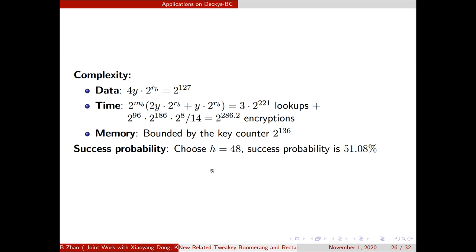And here we can obtain about 2^{170} quartets. Similar to the last step, we can count all the 136-bit sub-tweakey involved in E_f. We can choose the proper value for H and exhaustive search the remaining key bits. If we choose H equals 48, the complexity of data is 2^{127}. The time complexity is bounded by the key recovery, that is 2^{286.2}. The memory complexity is bounded by the key counter, that is 2^{136}. The success probability is about 51%.